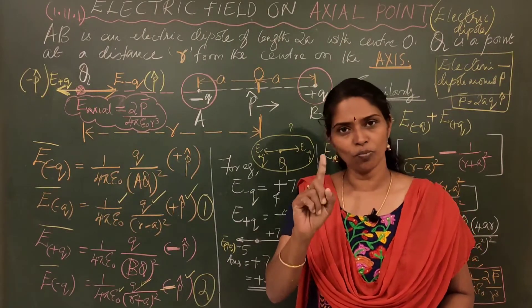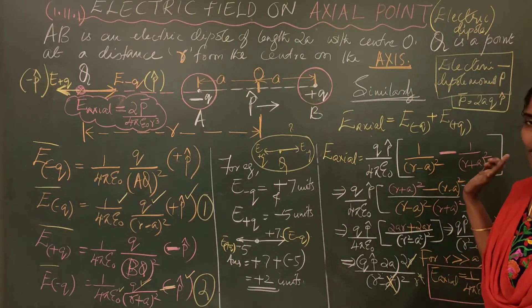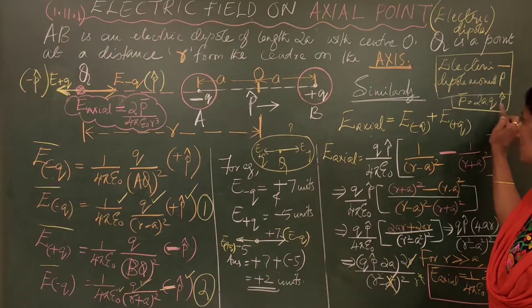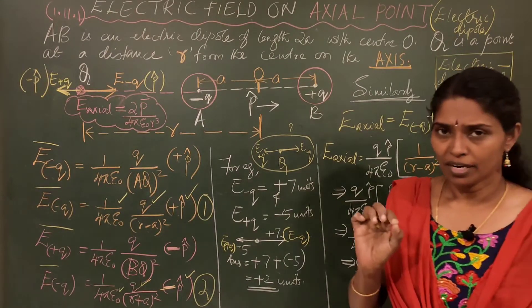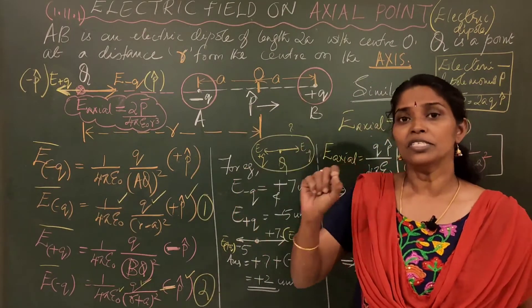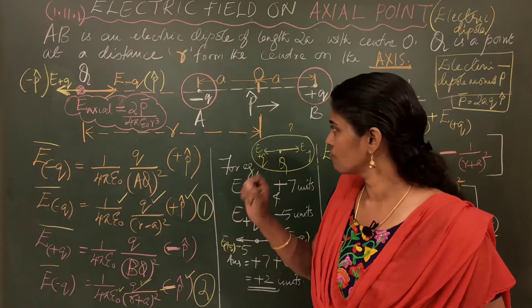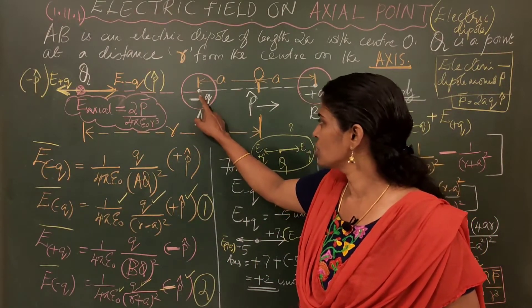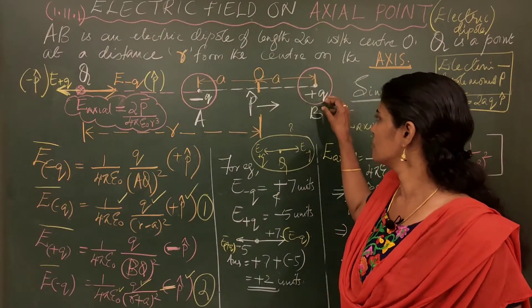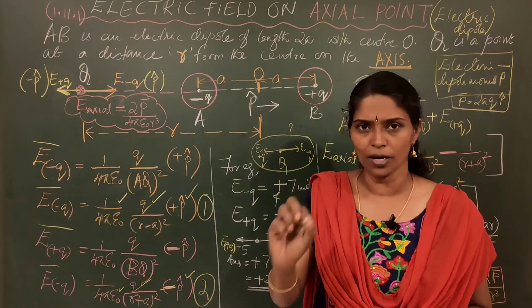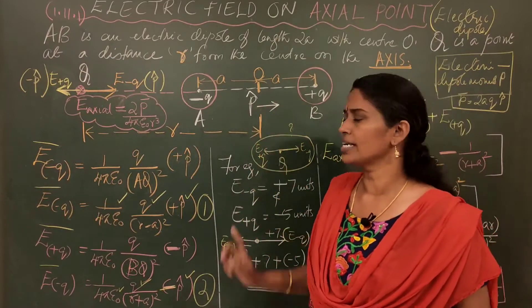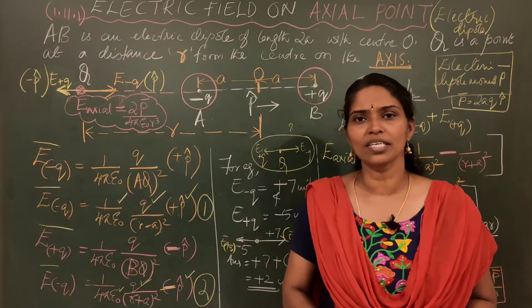And also one more point, electric dipole moment. It is given by P bar. It is equal to 2A times Q into P cap. The very important word P cap. P cap is a unit vector which denotes the direction of P bar and it is from minus Q to plus Q. Here, this is the charge minus Q situated at A. The charge at B is plus Q. So, the direction is from A to B. The direction is given as P cap which is the direction of electric dipole moment.